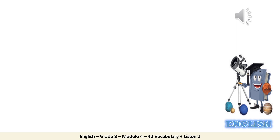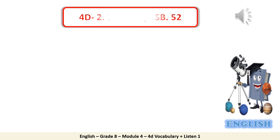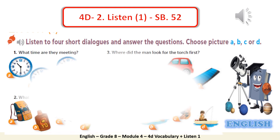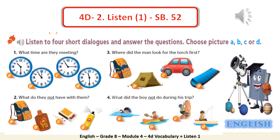Now let's move to the listening part — 4D Lesson 1, Student Book page 52. You're going to listen to 4 short dialogues and answer the questions below. Remember that each question is based on each dialogue, so you need to read the questions carefully, then listen to the 4 short dialogues carefully as well. Once you're done, you can check your answers with your teacher. Are you ready for listening? Let's get to the lesson now.